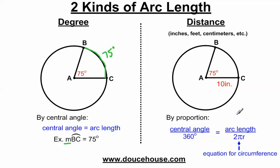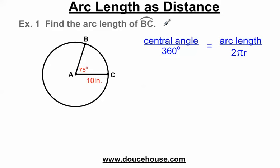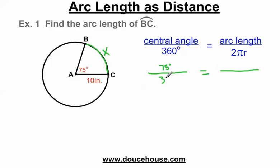I have three examples to show you. The first one is finding the arc length of BC — I'm going to call the unknown variable x. Setting up the proportion: do I know the central angle? Yes, it is 75 degrees, over 360 degrees. The arc length is x, over 2 times 3.14 times the radius, which I know is 10 inches.